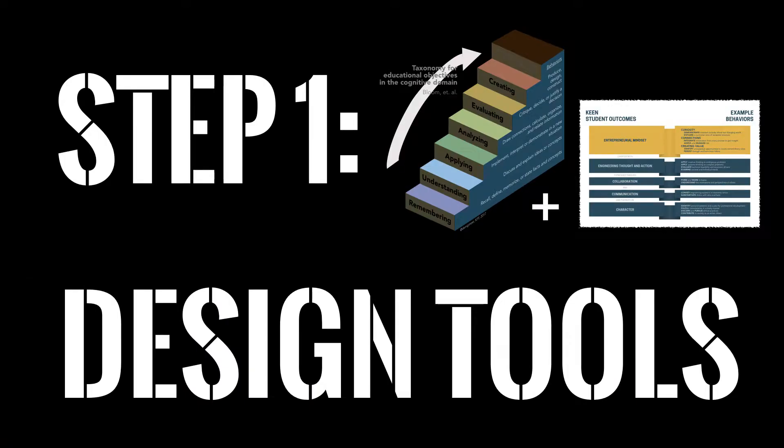We're still working on step one: getting educational objectives. We can combine Bloom's Taxonomy with the Keen outcomes. Let's see how.